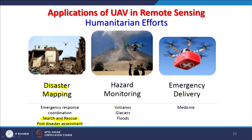UAVs can be used for post-disaster assessment and hazard monitoring in places that are difficult or dangerous for humans, such as volcanoes, glaciers, and flood zones. In earthquakes and landslides, UAVs can also be deployed. For emergency deliveries, medicines can be delivered to a target location — there might be a loss of road connectivity or no other possibility of delivering emergency medicines, and UAVs can carry a box of medicines to the needed location.